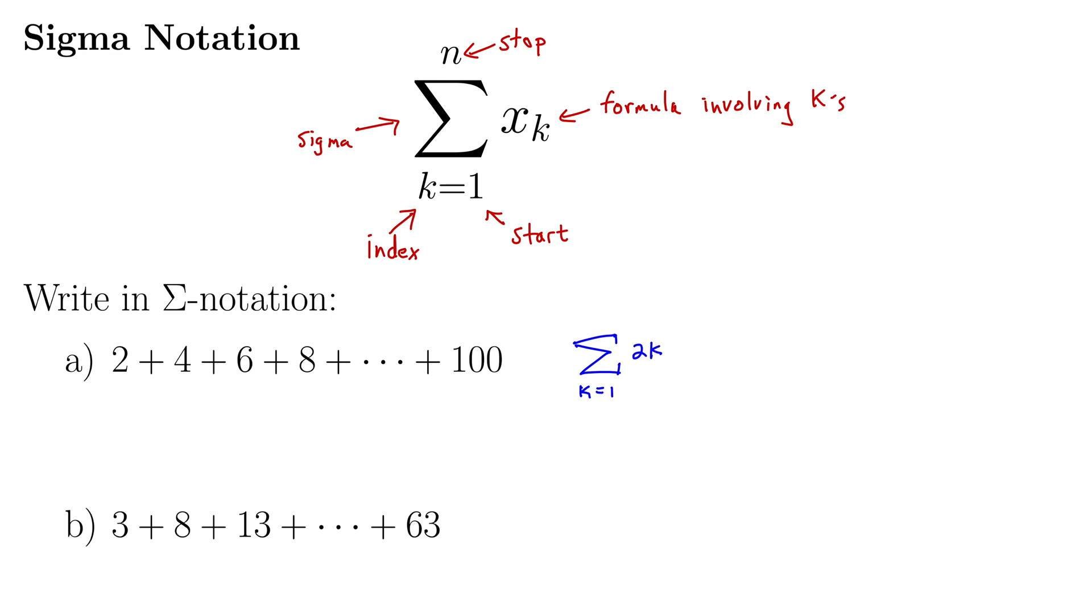The next question is where to stop it. Well, I think we should stop it at 50, because 2 times 50 would give us 100, and that's where we want to stop. And there you have it. It's a nice compact way of representing this sum. And you can imagine as our sums get larger and larger, we definitely want to use a more compact notation.